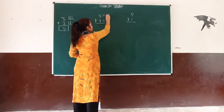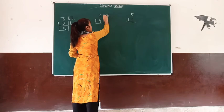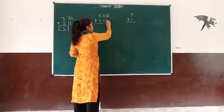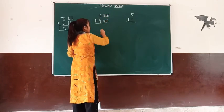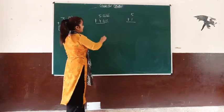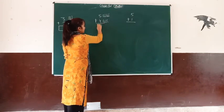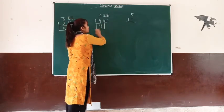So we count all the lines together: 1, 2, 3, 4, 5, 6, 7, 8, 9. The lines going to the other side. 5 plus 4 is equal to 9.